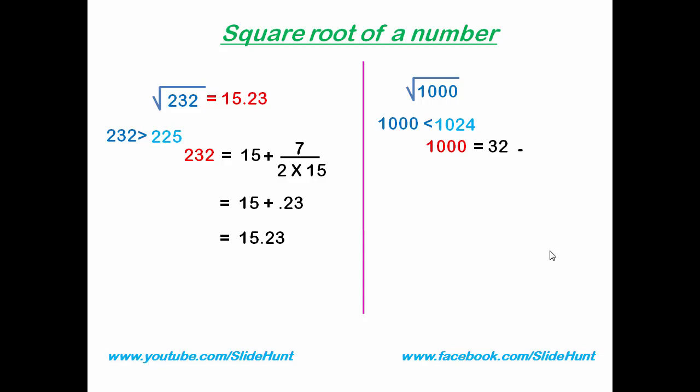The difference between 1024 and 1000 is 24. Subtract 24 divided by 2 times 32. Now reduce this fraction and we get 3/8. 3/8 is 0.375. 32 - 0.375 = 31.625. That's it.